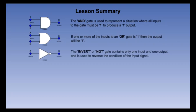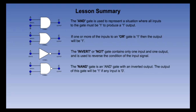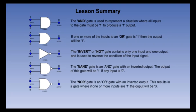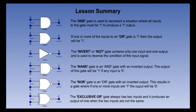The Invert or NOT gate contains only one input and one output and is used to reverse the condition of the input signal. The NAND gate is an AND gate with an inverted output — the output of this gate will be one if any input is zero. The NOR gate is an OR gate with an inverted output — this results in a gate where if one or more inputs are one, the output will be zero. The Exclusive OR gate always has two inputs and produces an output of one when the two inputs are not the same — for an output of one, one input must be one and the other zero.